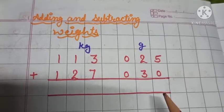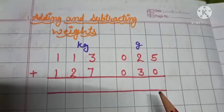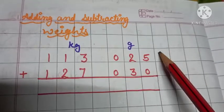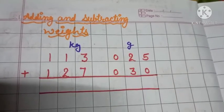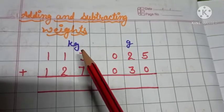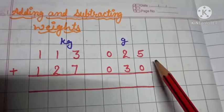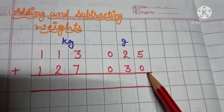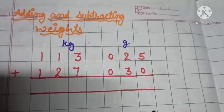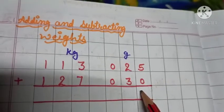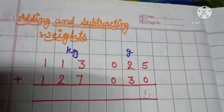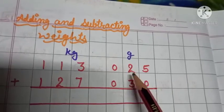Let's solve one more example. Here, we have to add the values of gram with each other and the values of kilogram with each other. So let's start here. 5 and 0. When we add 5 and 0, we get 5.